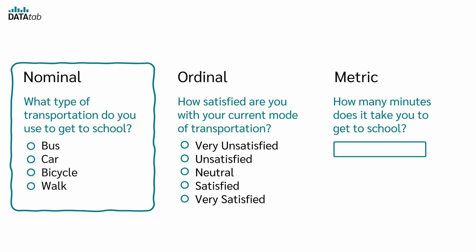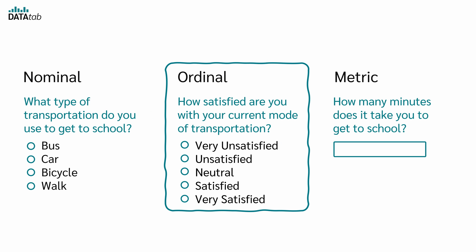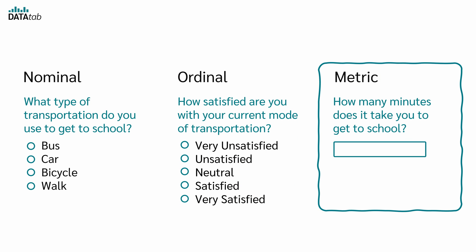So, using nominal data, we can categorize and count responses, but cannot infer any order. Ordinal data allows us to rank responses, but not to measure precise differences between ranks. Metric data enables us to measure exact differences between data points.